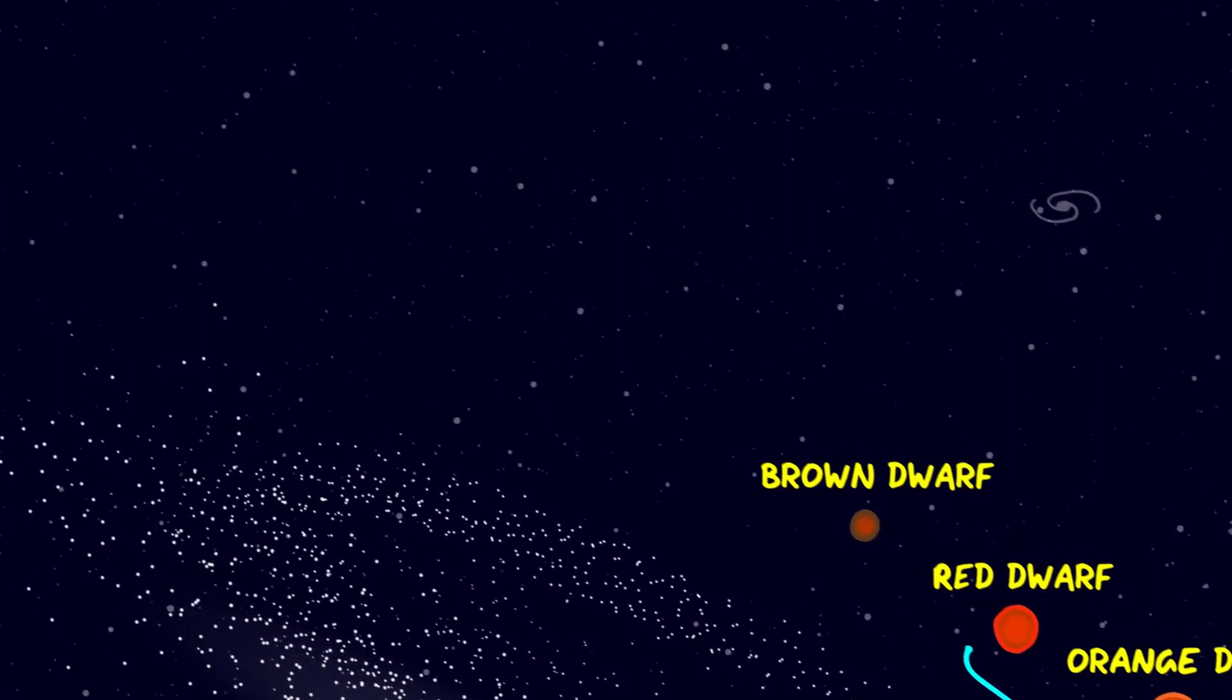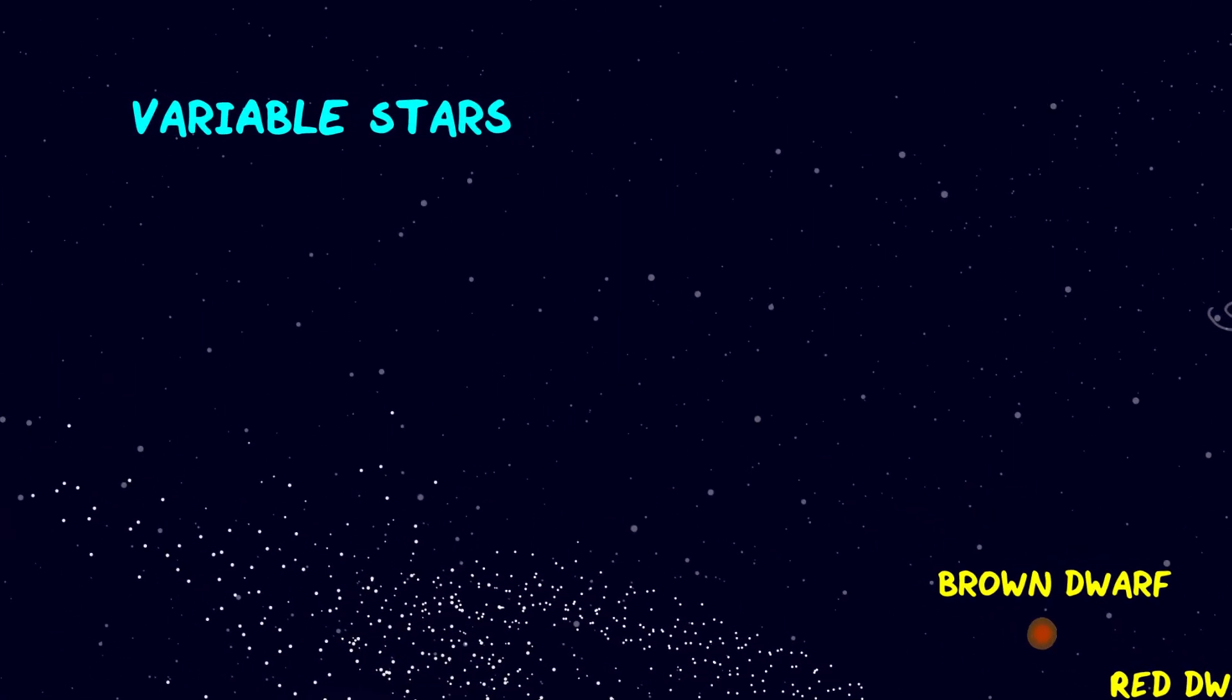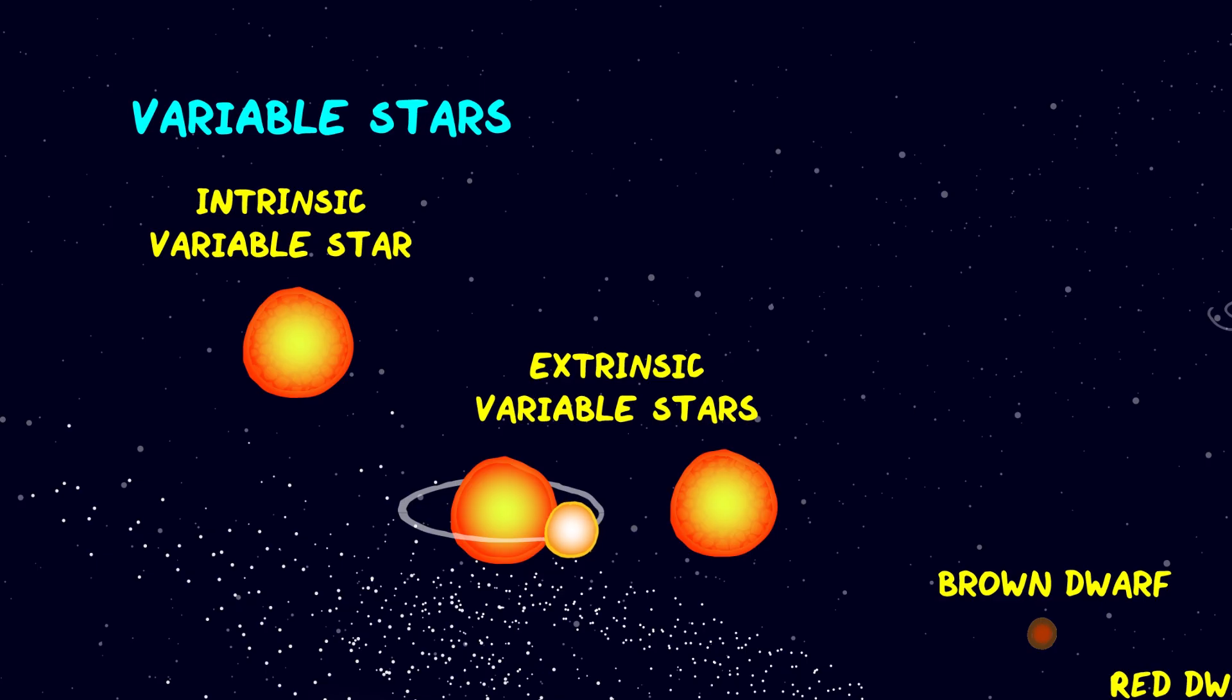The brightness of many stars varies over time and these are known as variable stars. There are a few different kinds. Intrinsic variable stars, their luminosity actually changes due to a change in size, whereas with extrinsic variables the brightness changes because of an orbiting companion moving in front of it like a binary star system or extrasolar planets.